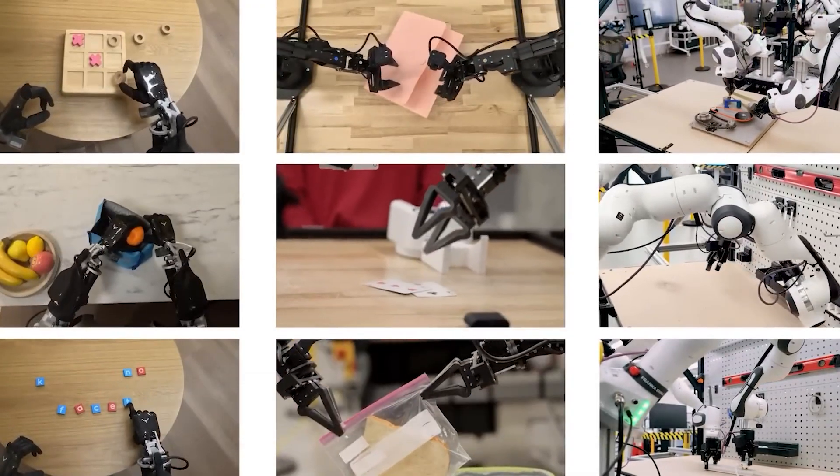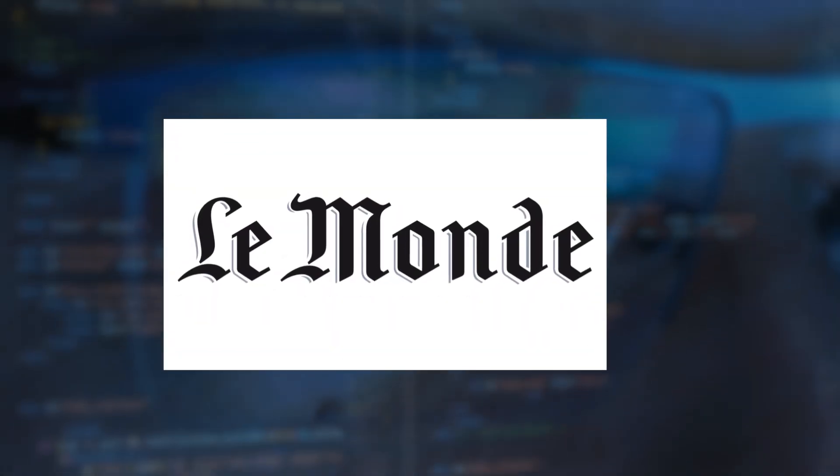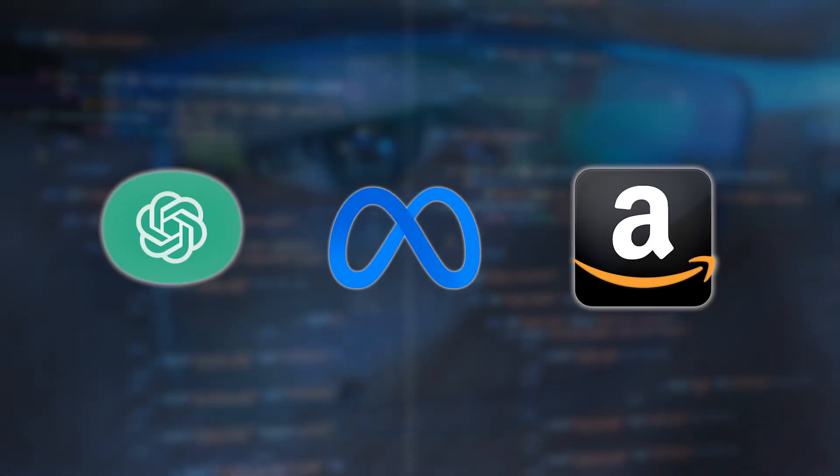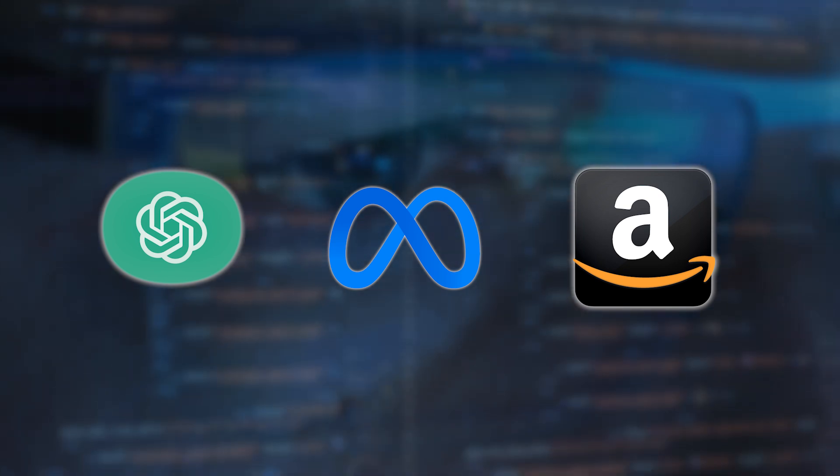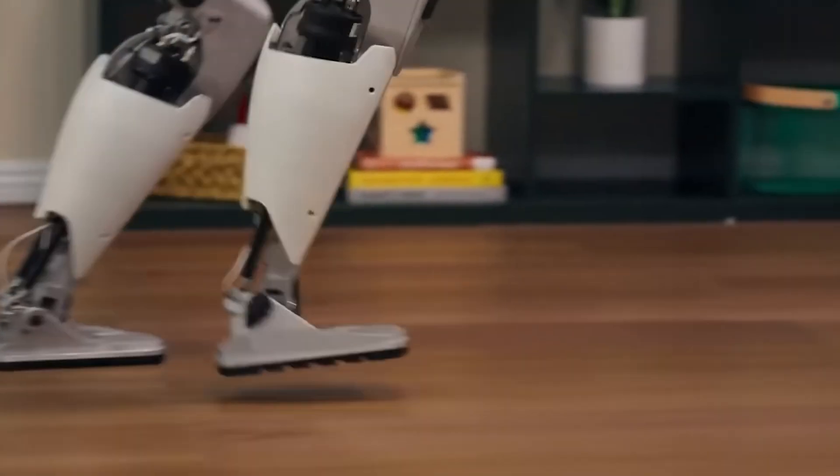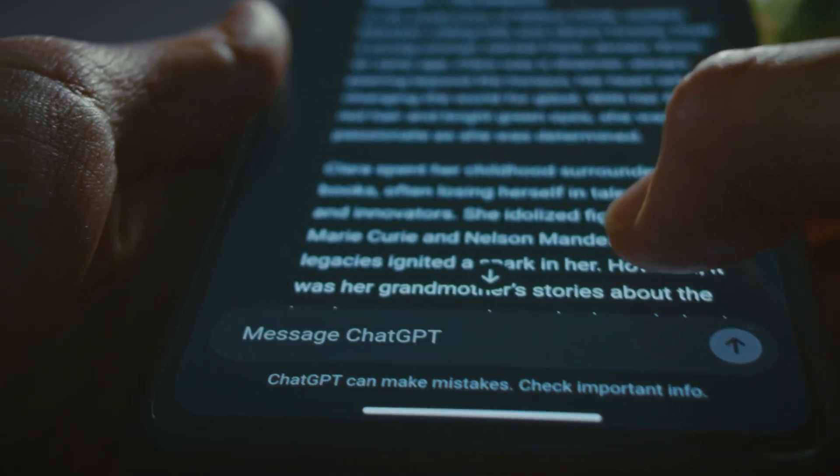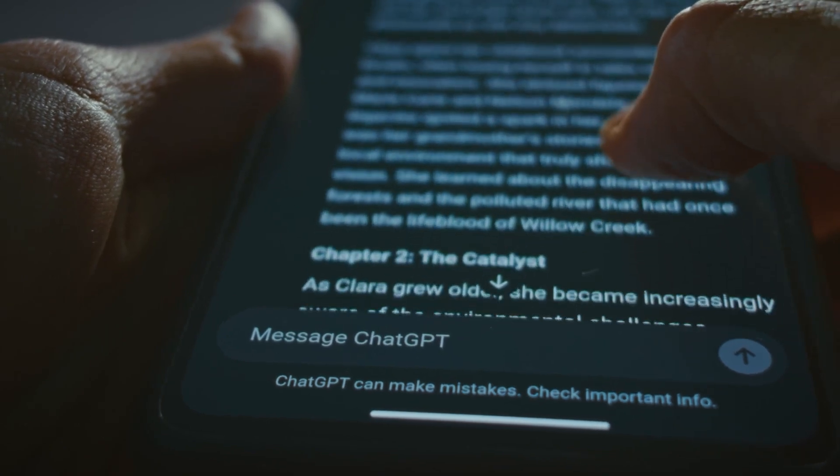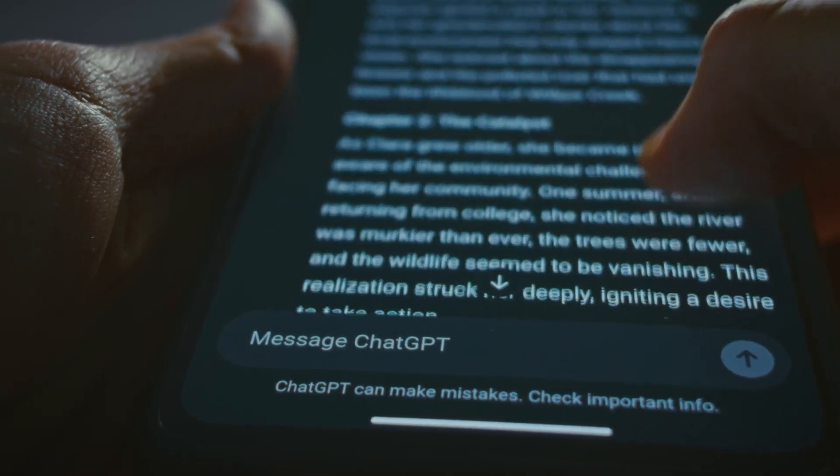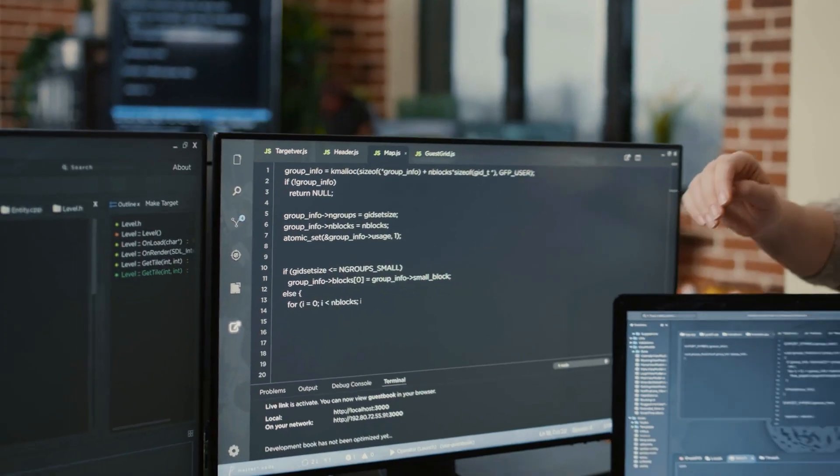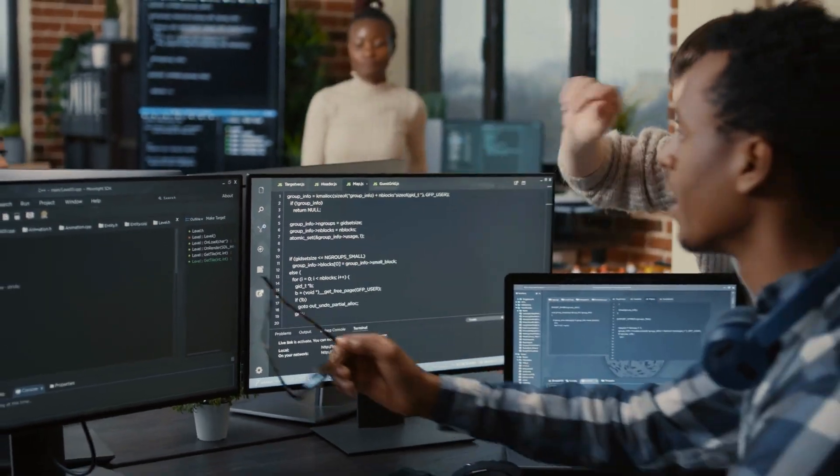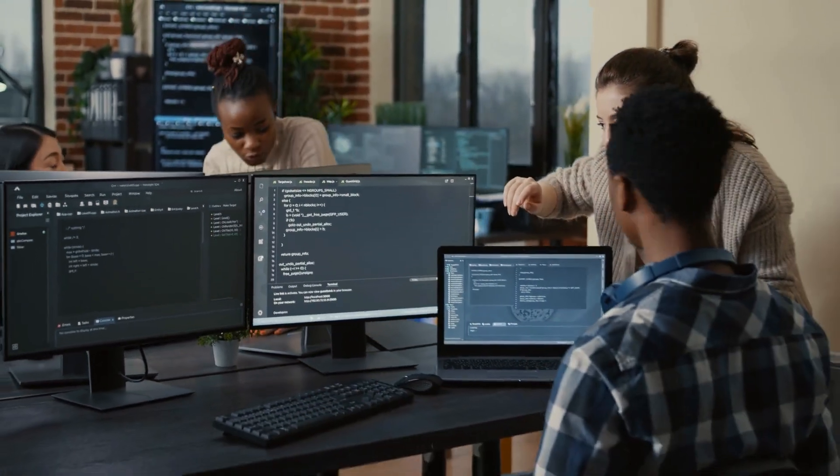Google's announcement has effectively fired the starting gun in what I'm calling the Great Robotics Race of 2025. According to my research from Le Monde, OpenAI, Meta, and Amazon are all pivoting hard toward robotics, recognizing that controlling the physical world is the next frontier for AI dominance. Sources tell me that OpenAI already has a robotics division working around the clock to catch up, while Meta is leveraging its Reality Labs expertise to develop competing technology.